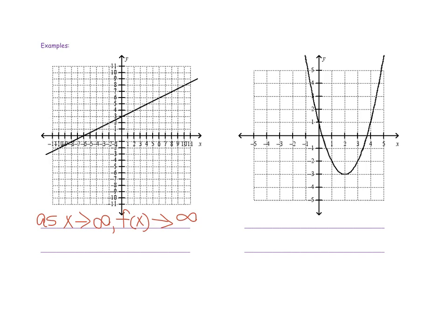Now let's look at the second end behavior statement — this one has to do with when your x value is approaching negative infinity. We want to know what the f of x value is approaching as x goes towards negative infinity. If we go leftward, we see the x values are decreasing, and the f of x values are also decreasing. So we would say: as x approaches negative infinity, f of x also approaches negative infinity.